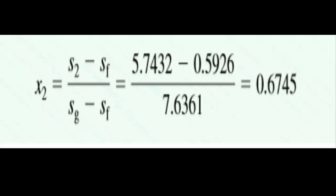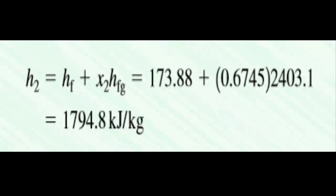Now as the quality is calculated, we now calculate the enthalpy at stage 2. First we see the Hf and Hfg values again from the table A-2. This time we use the quality formula: H2 = Hf + x2·Hfg. As you can see in the table there will be the values. Now we calculate H2 = 1794.8 kilojoules per kilogram.